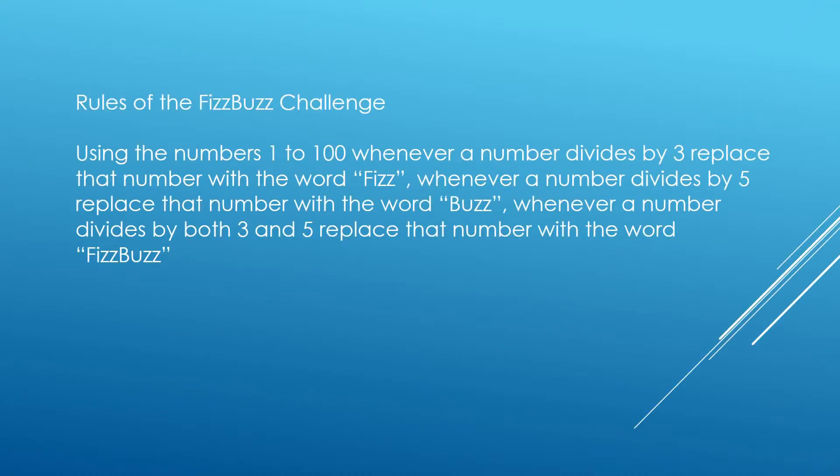The rules of the challenge are as follows. Using the numbers 1 to 100, whenever a number divides by 3, replace that number with the word Fizz. Whenever a number divides by 5, replace that number with the word Buzz.